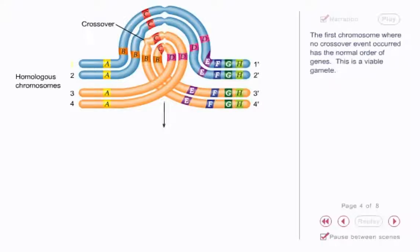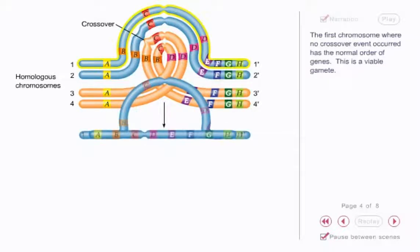The first chromosome, where no crossover event occurred, has the normal order of genes. This is a viable gamete.